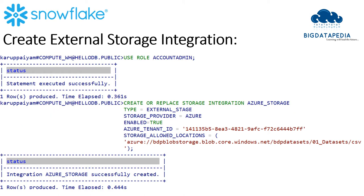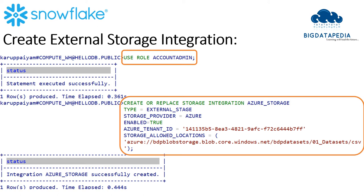Now I am going to create an external storage integration on top of Azure. I have to change my role to admin access, and then I can create the integration. The command is CREATE OR REPLACE STORAGE INTEGRATION with the integration name, and I mention the property type as external stage and storage provider as Azure.